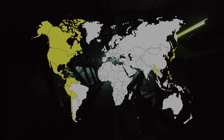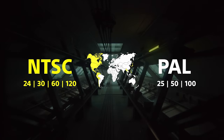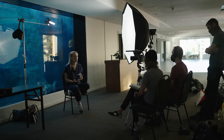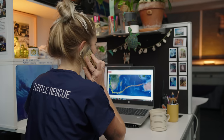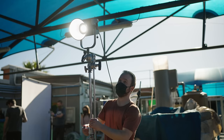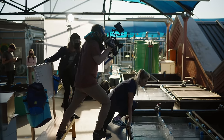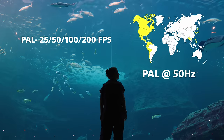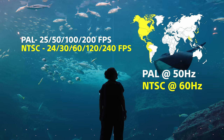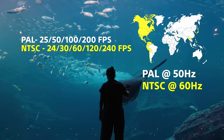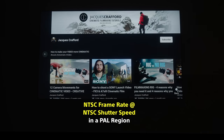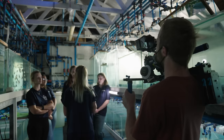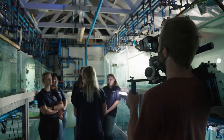Question one: what is your region? The only time you will choose a frame rate based on your region is when you're shooting anything that works with electricity, like lights or a screen. This has to do with the fact that different regions use a different energy frequency, better known as the alternating current, with the PAL region running at 50 hertz and the NTSC region at 60 hertz. If you choose a frame rate that clashes with this frequency, you're bound to see some form of flicker. When you're using any form of lighting, the best practice is to stick to your region.